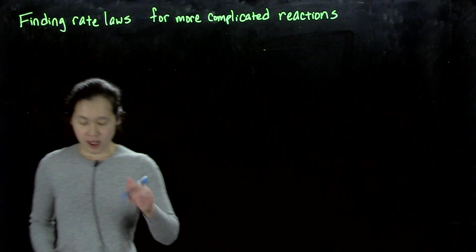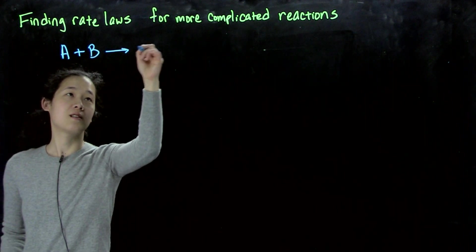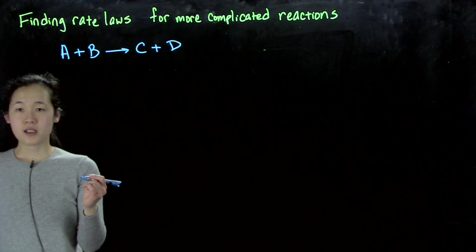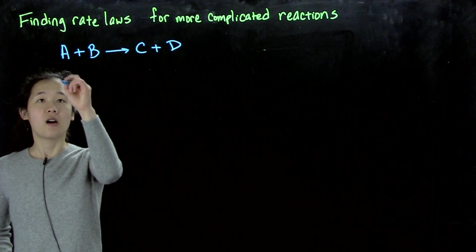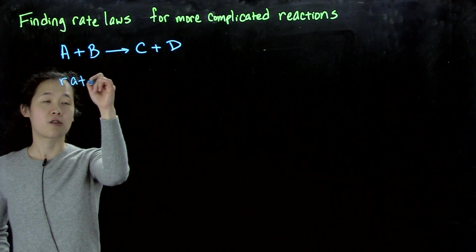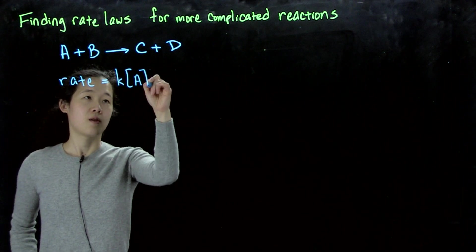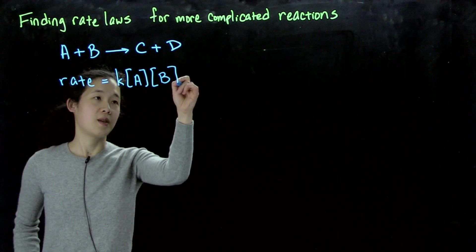So let's suppose we have two reagents, A plus B going to C plus D. In the case of a second-order reaction, that could be first-order in both reactants A and B. Our overall rate for this second-order reaction would have dependence on both the concentrations of A and the concentration of B.